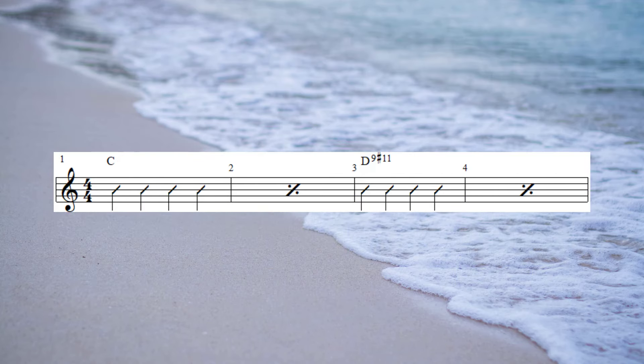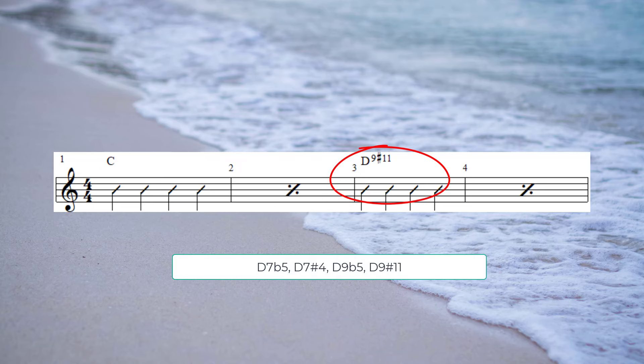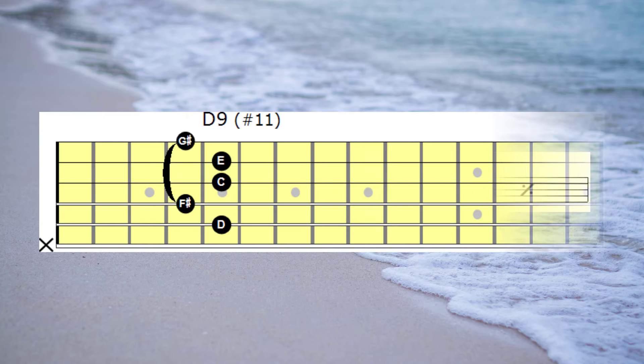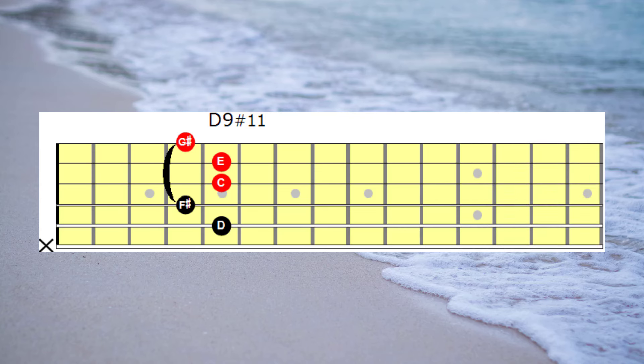The chord progression we'll be using in this session is the first eight bars of Take the A train. Now depending on which version you're playing from, the chord in bar 3 could be indicated as D7 flat 5 or D7 sharp 4 and so on. I'm going to refer to this chord as a D9 sharp 11. And here's one way that we could play that chord. And now here's the same chord only this time revealing a C augmented triad as part of this chord.